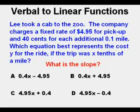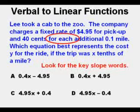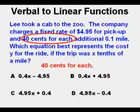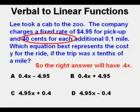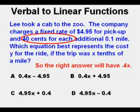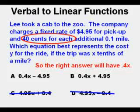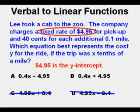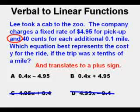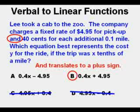Our first question is: what is the slope? We look for the key slope words. In this case we have 'for each' — $0.40 for each. So the right answer is going to have 0.4x, since $0.40 is 4 tenths of a dollar. We can immediately eliminate choices C and D because they each have 4.95x. Now we look at the y-intercept: 4.95 is the y-intercept. The word 'and' translates to a plus sign, not a minus sign. Therefore B is our correct answer.